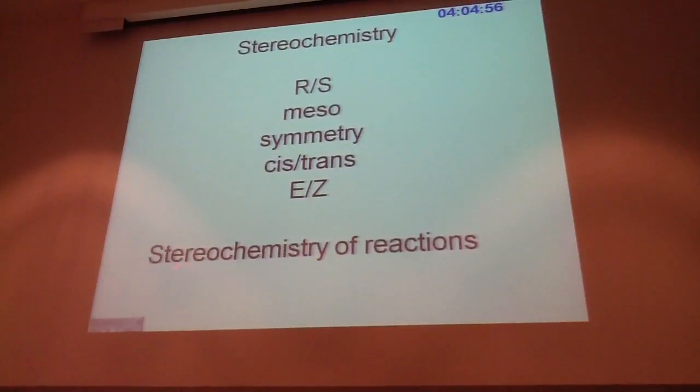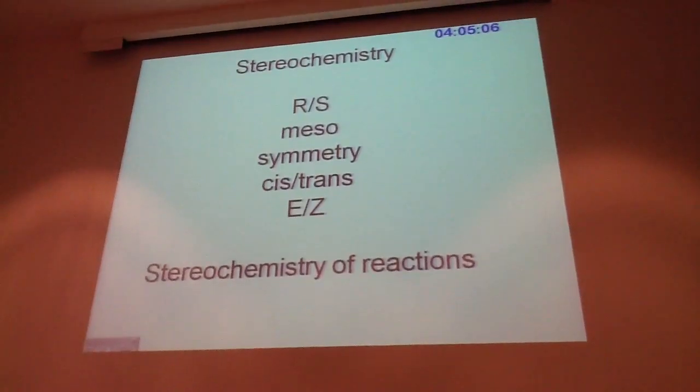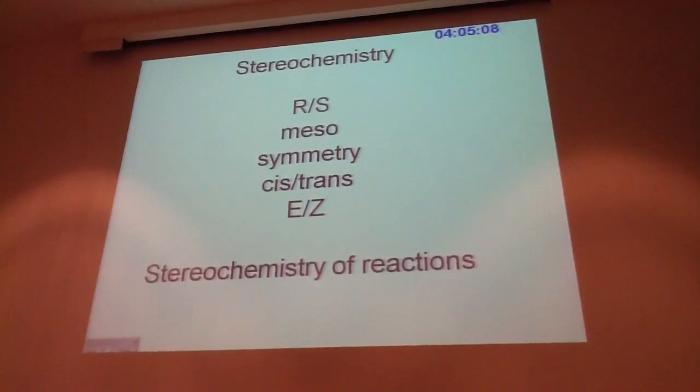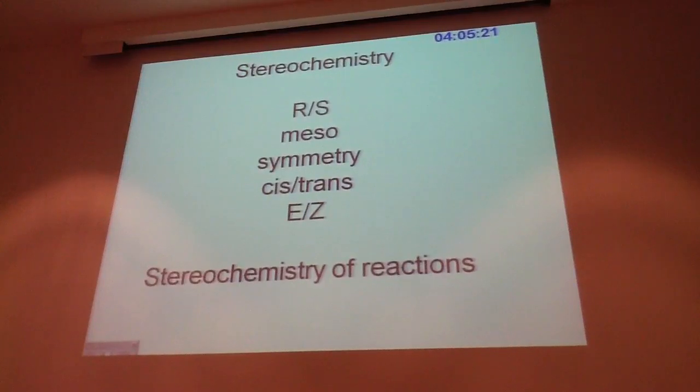You cannot completely take away the geometries that we already talked about in alkenes, so EZ or cis-trans. That's also stereochemistry. So if you count down, as we did this one quick impression, don't forget those. You also have variations there. And finally, consider stereochemistry of reactions.